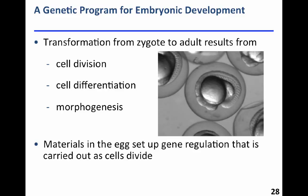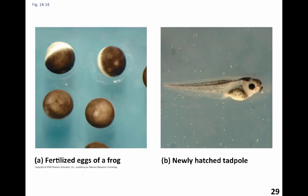Materials within the egg set up gene regulation that's carried out as the cells divide. The egg contains lots of nutrients and all the cellular components, including mitochondria with their own DNA, which comes from the maternal side. The materials in the egg and the way those first few cell divisions occur set up how genes are regulated to turn on, turn off, and for how long. With frogs, for instance, there's a lot of development before the newly hatched tadpole, and they further transform when they develop legs, lungs, and reabsorb the tail.